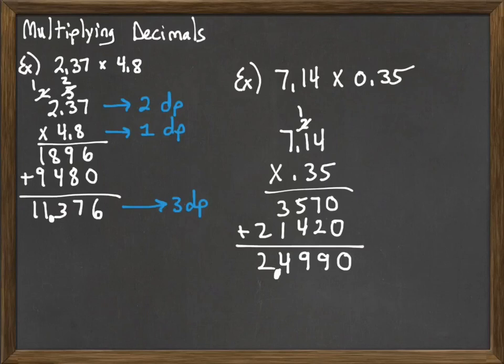2.4990. And when you write that answer down, you can leave off the 0 on the end if you want.